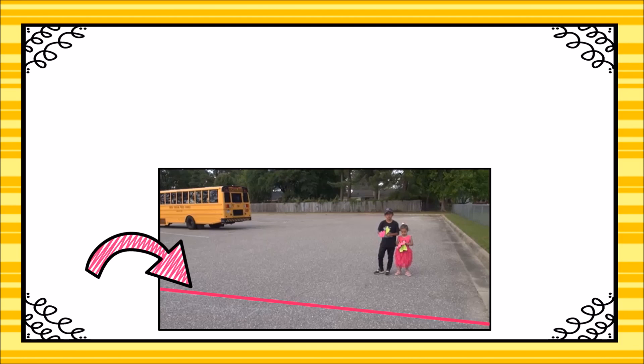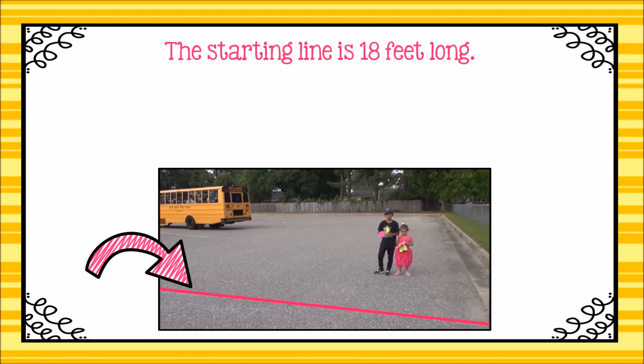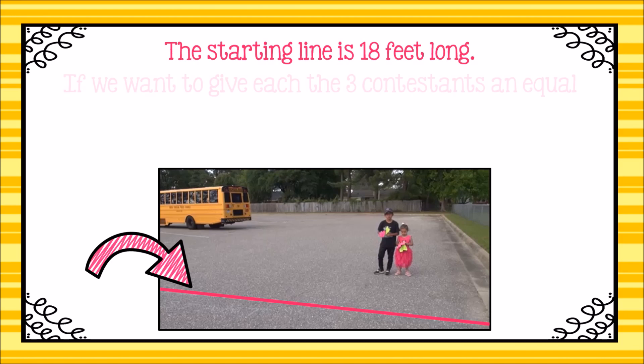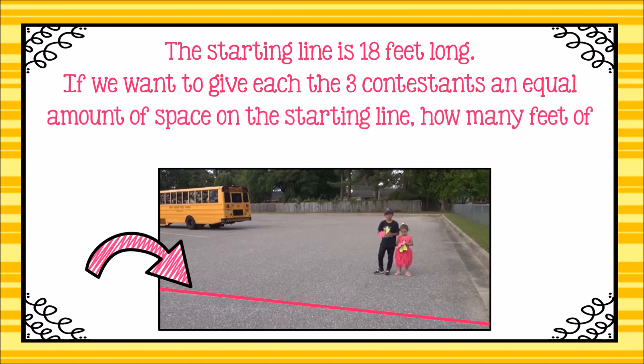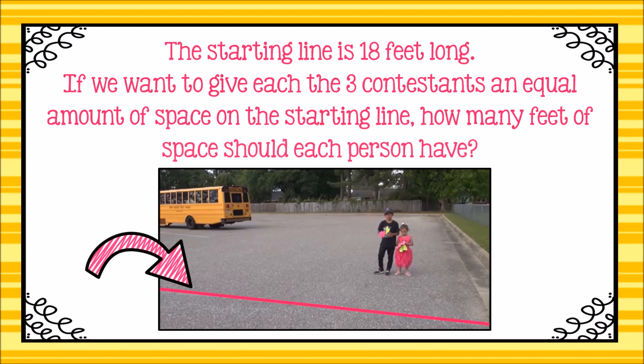For today's airplane contest, there are three contestants: Jackson, Reagan, and myself. The starting line for our contest is 18 feet long. If we want to give each of the three contestants an equal amount of space on the starting line, how many feet of space should each person have? Pause the video to answer this question. Press play once you have an answer.